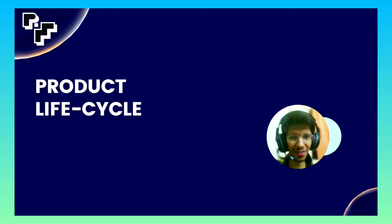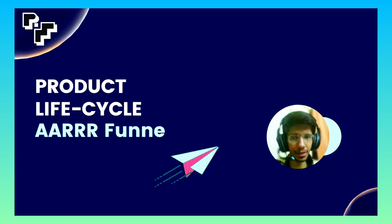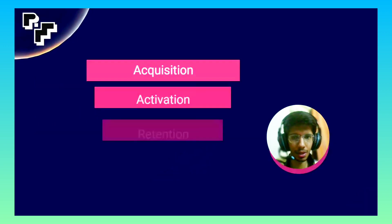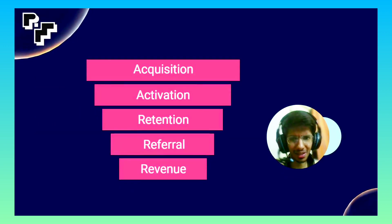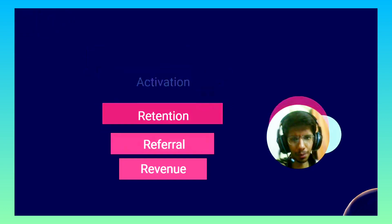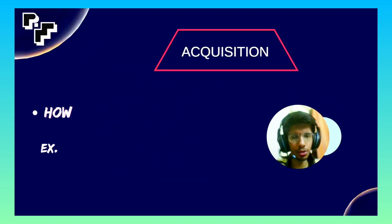Today we are going to have a look at product lifecycle by using the pirate metrics, also called the double A triple R funnel. This funnel consists of five stages: the first being acquisition, second being activation, then retention, referral, and revenue. Let's have a look at what each of these means separately, one by one.